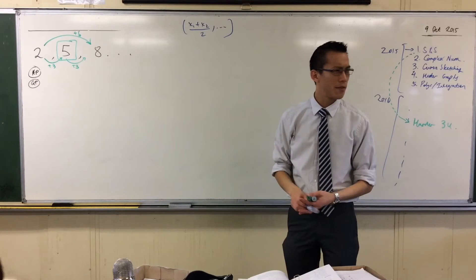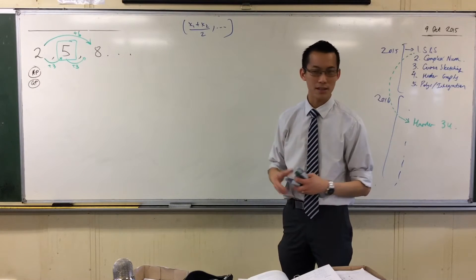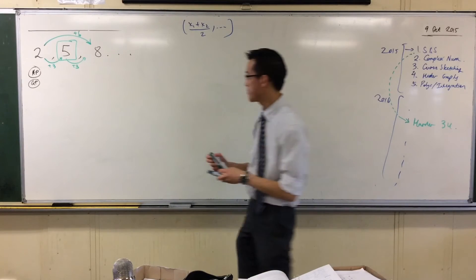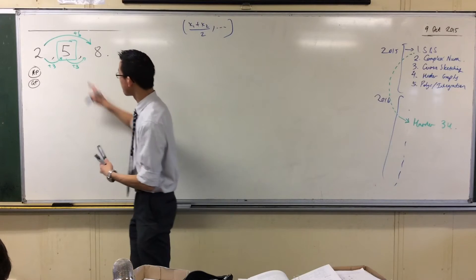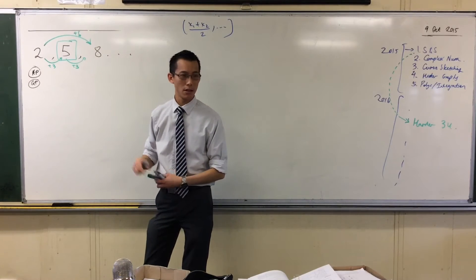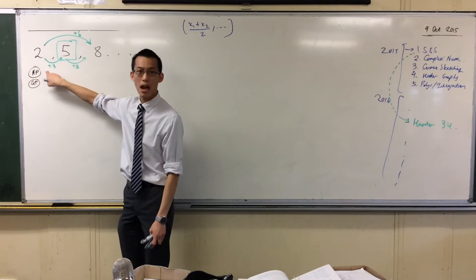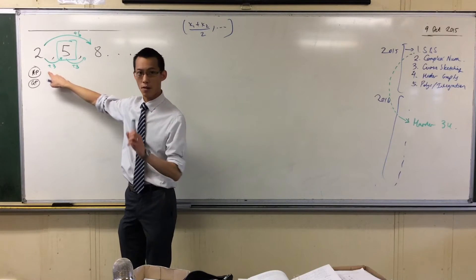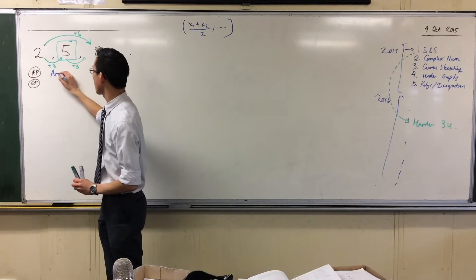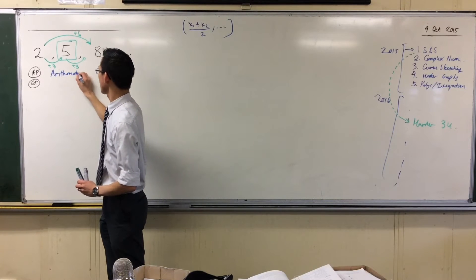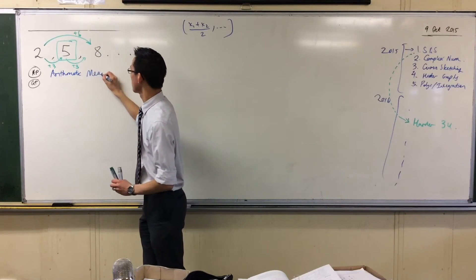By the way, we have another word for average, a more technical one, starts with an M. Mean, right? Now let's label this. Five is the mean of two and eight. It's the mean of two and eight. But it's the particular mean that makes it an arithmetic progression. So I'm going to be a little more fine and call this the arithmetic mean.